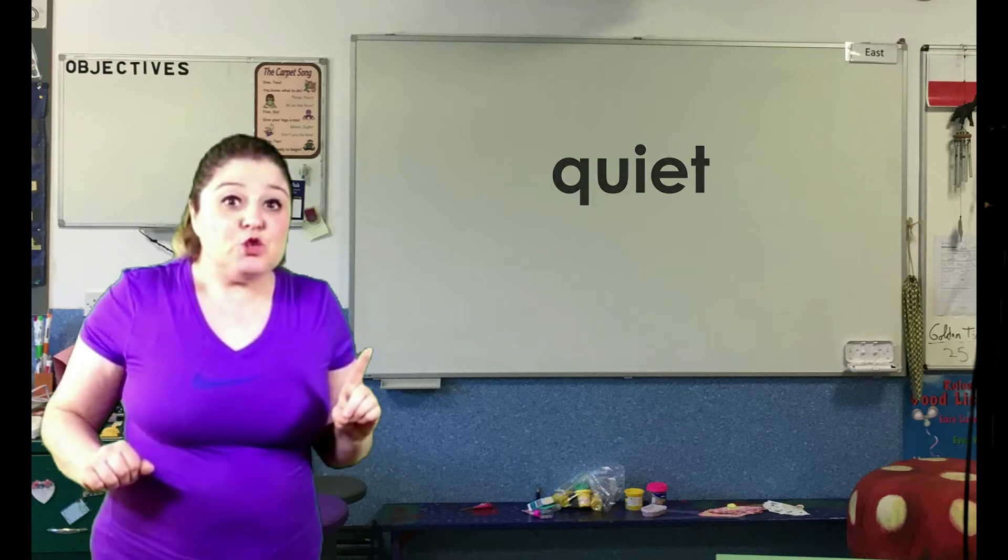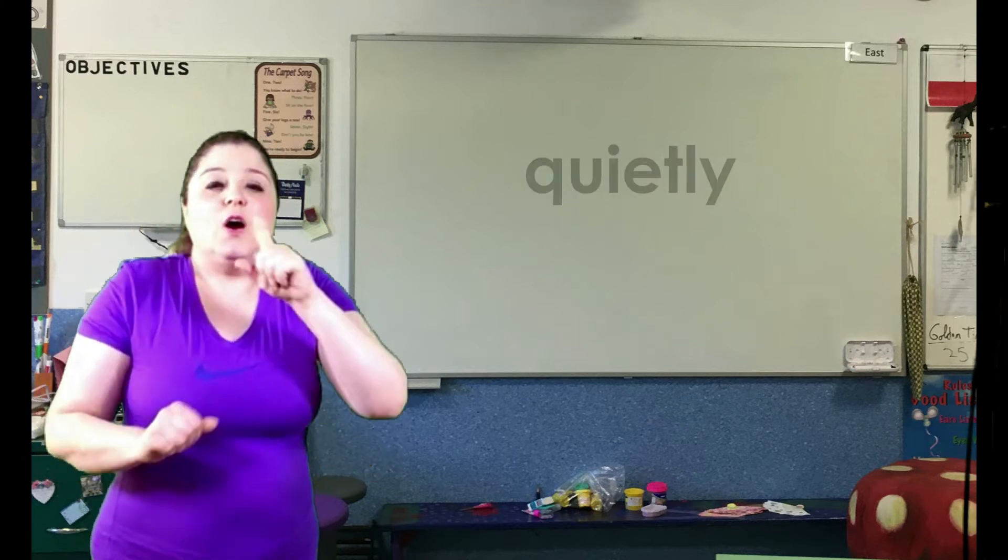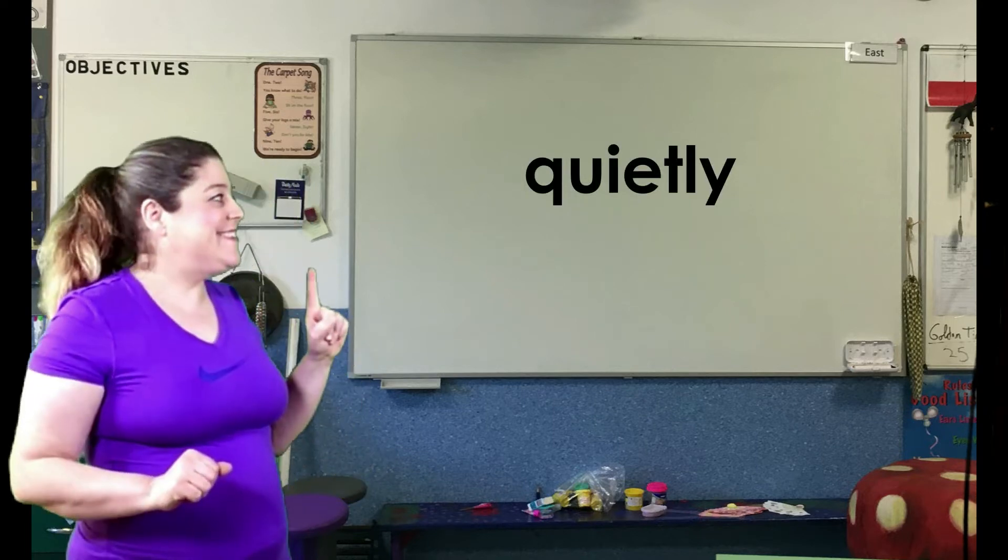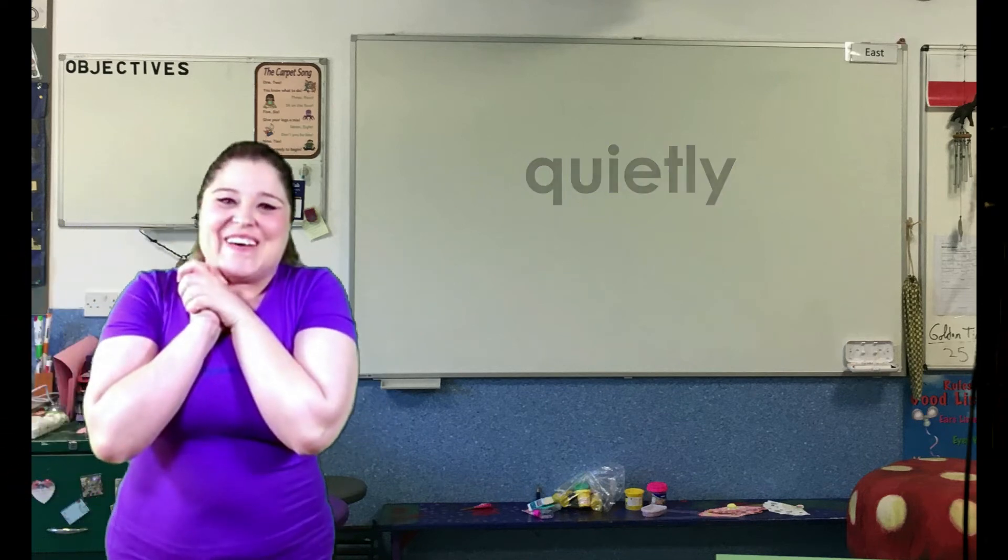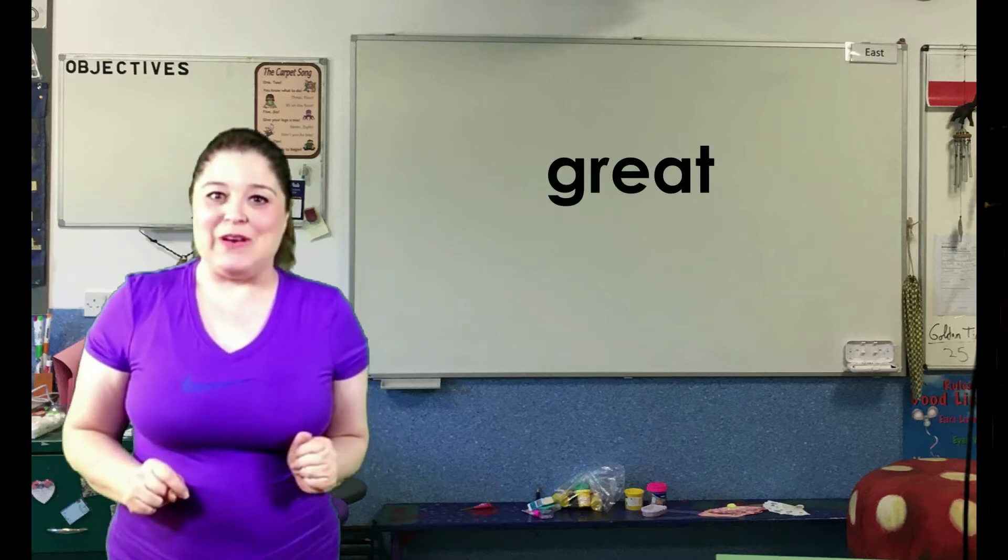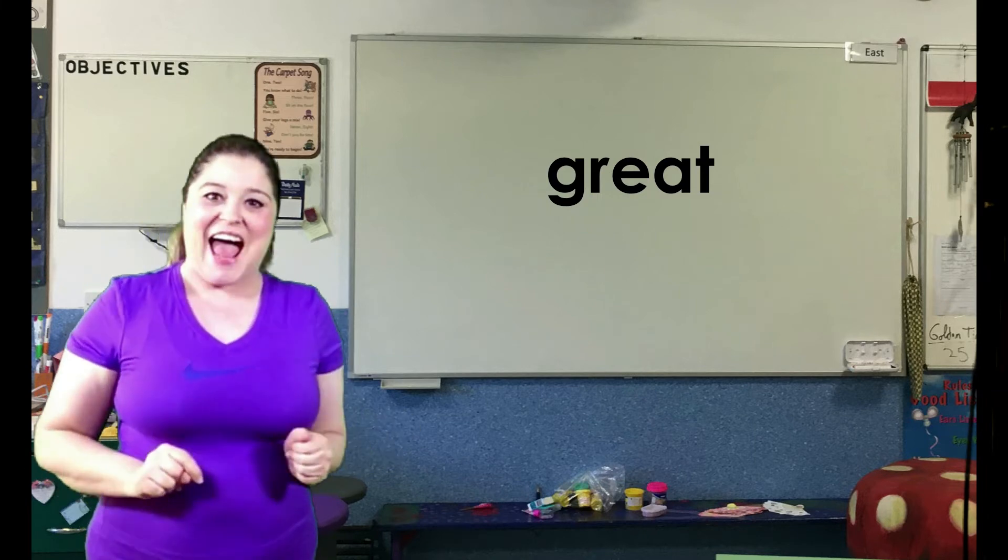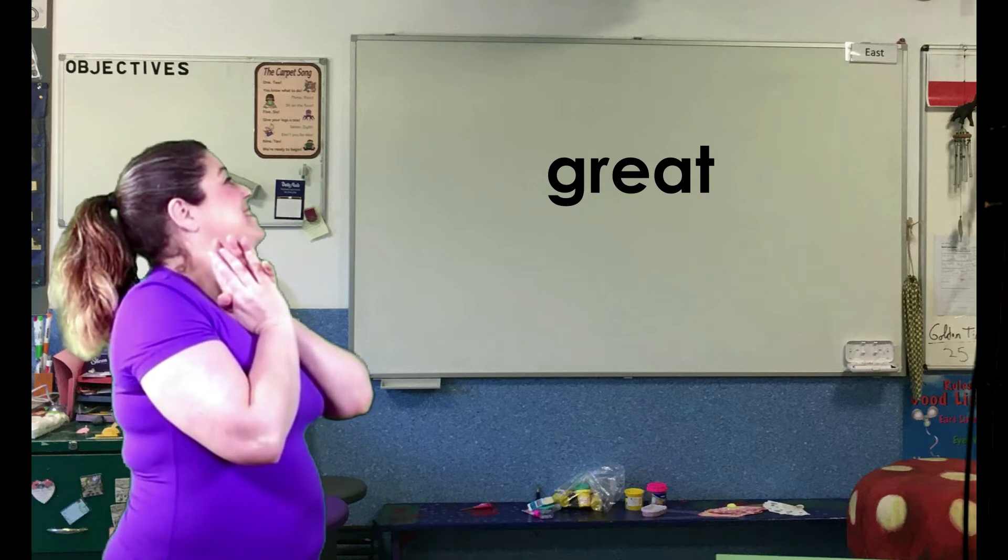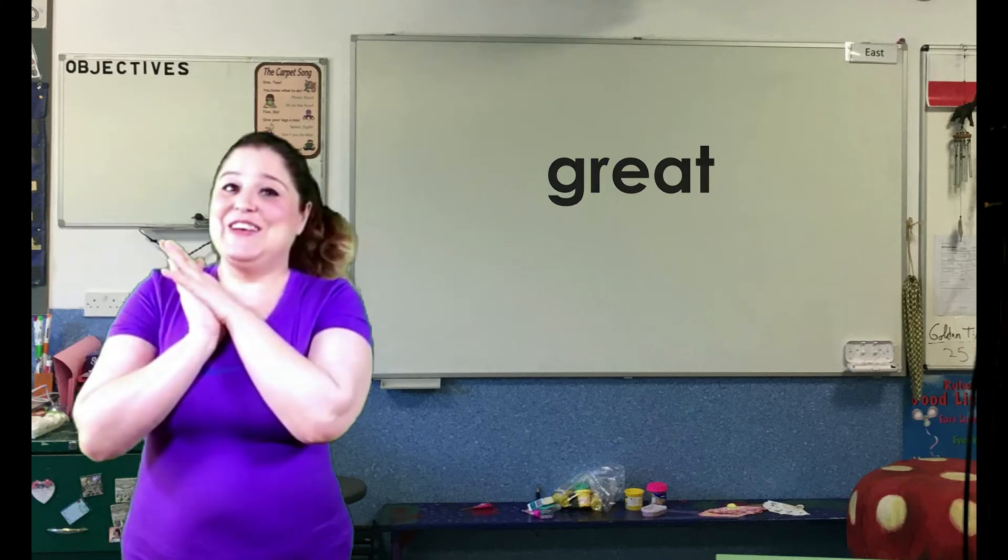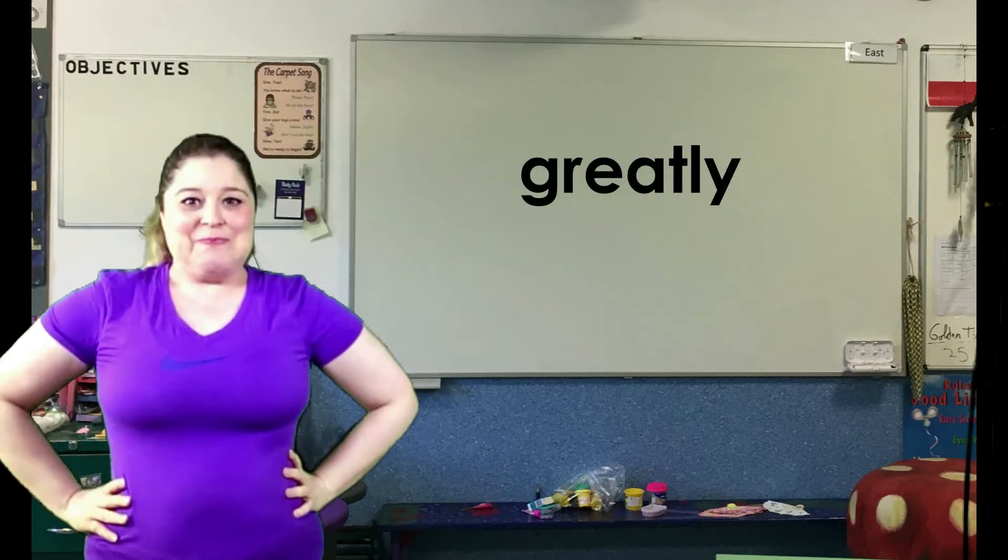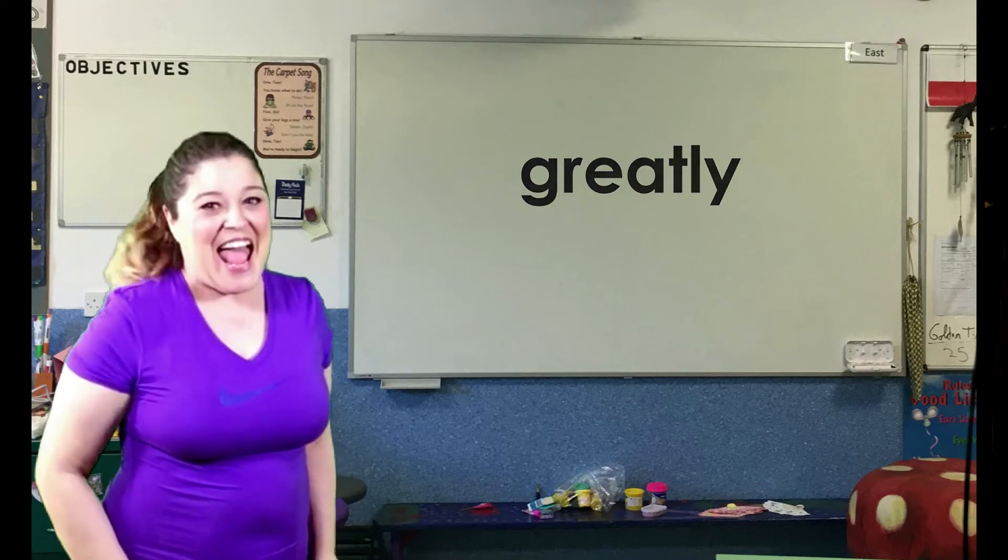The adverb you should have made was quietly. All right, last one. Write the adjective GREAT on your whiteboard, and then add the suffix LY to make an adverb. Go ahead. You should have written the adverb GREATLY. Did you enjoy that? Excellent.